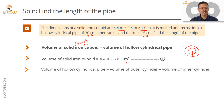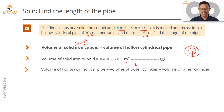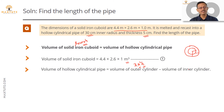The volume of the cylindrical pipe is the volume of the outer cylinder minus the volume of the inner cylinder. The formula for the volume of a cylinder is π r² h. So we need three things: the height, the outer radius, and the radius of the inner cylinder.